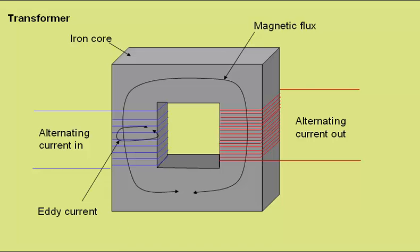This changing magnetic flux in the iron core leads to eddy currents within the core. This can lead the iron core to heat up, which of course is an energy loss, reducing efficiency.